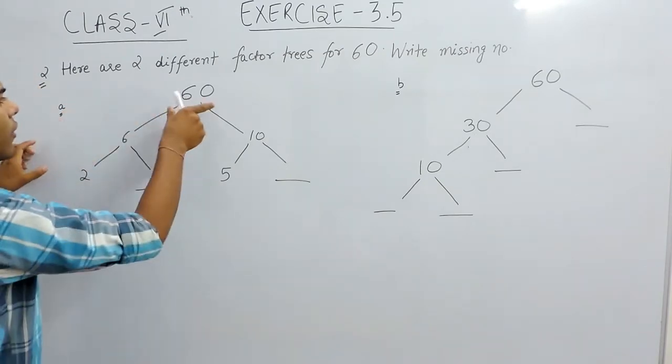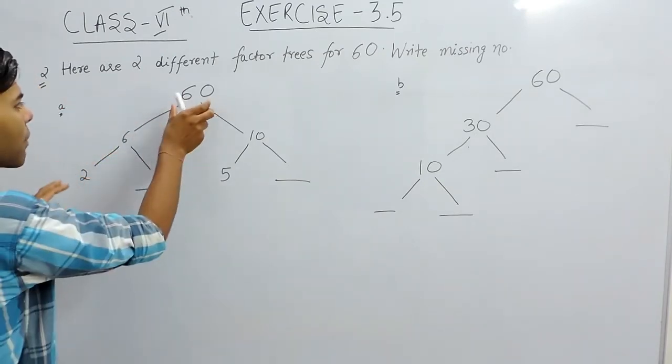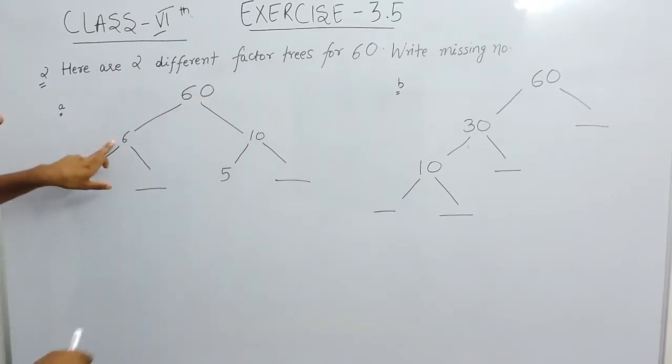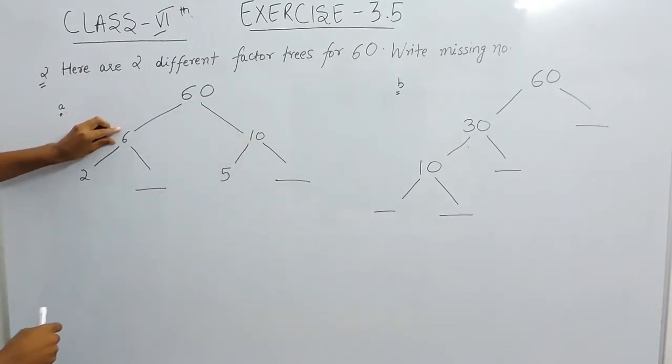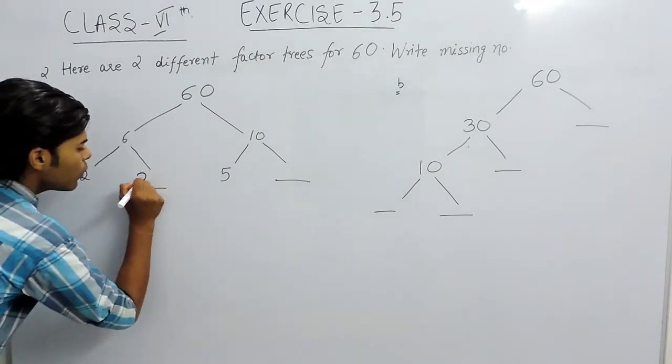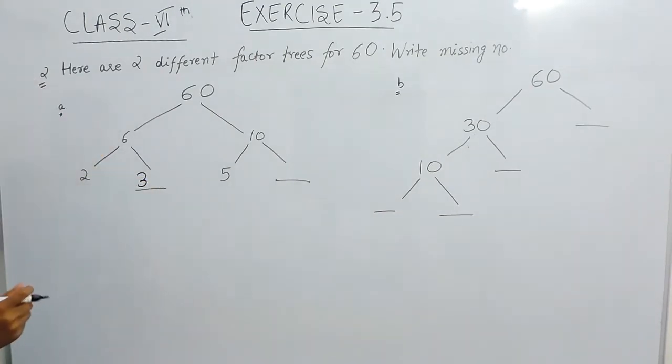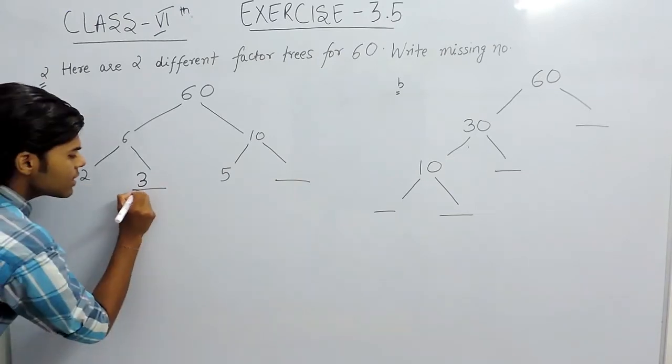First, the question is given in such a way that 60 can be written as 6 multiplied with 10. Now we have to find out what number should be multiplied with 2 to give 6. If we multiply 2 with 3, the answer will be 6. So this part's answer is 3.